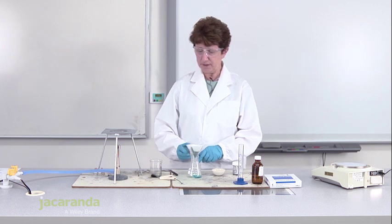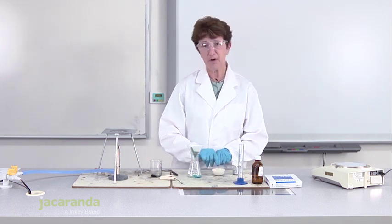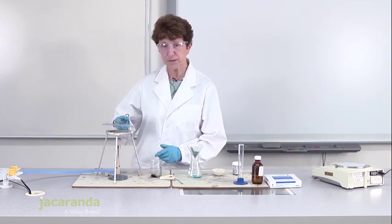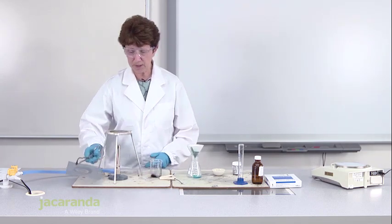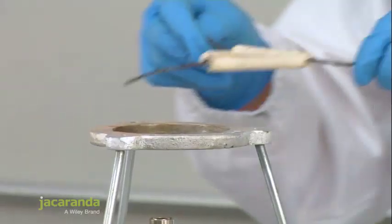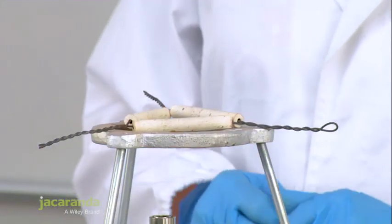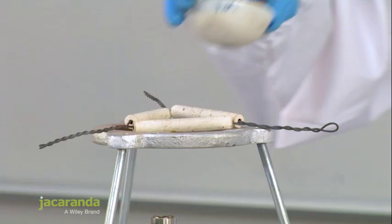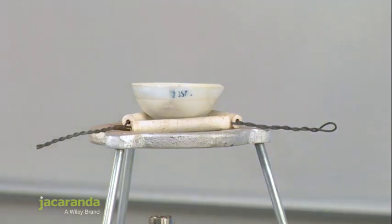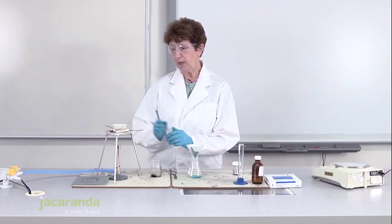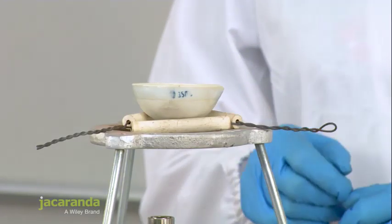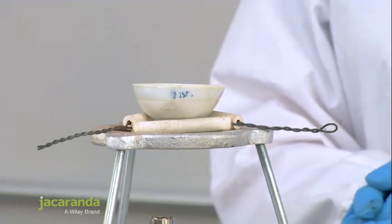After we've filtered that, we're going to pour it into our evaporating dish and evaporate some of the liquid off. We need to change our wire gauze and instead use a pipe clay triangle so that our evaporating dish sits neatly on top of the tripod. We're going to pour our filtrate once it's all gone through the filter paper into here and evaporate it a little and then leave it overnight and see what lovely crystals we've got at the end.